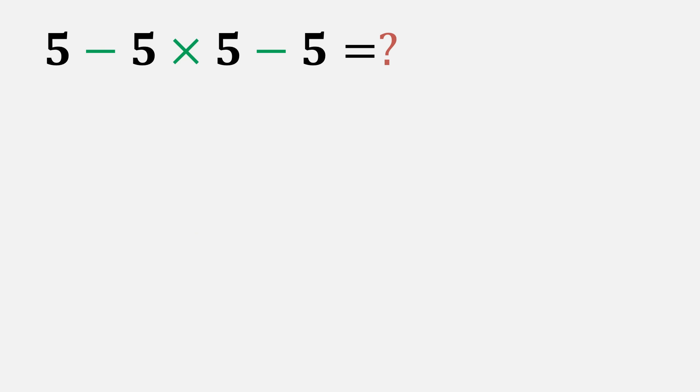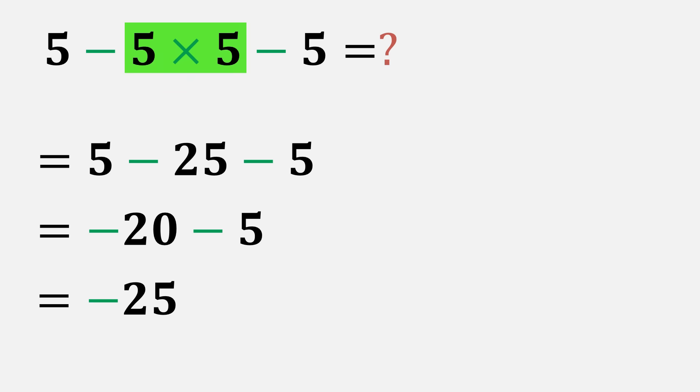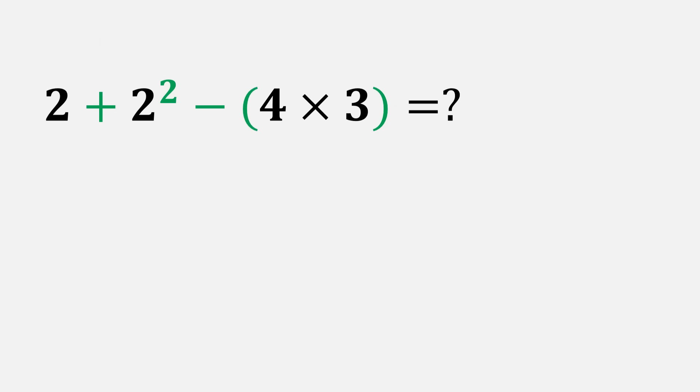Let's start with the first example: 5 minus 5 times 5 minus 5. According to the order of operations, we always do multiplication before subtraction. So here we first multiply 5 times 5, that gives 25. Now our expression becomes 5 minus 25 minus 5. Let's move from left to right: 5 minus 25 equals negative 20, then negative 20 minus 5 equals negative 25. So the correct answer is negative 25.